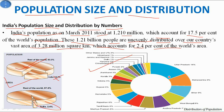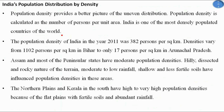The distribution is uneven across states. Only 5 states cover almost 50% of India's population. These five states are Uttar Pradesh, Maharashtra, Bihar, West Bengal, and Andhra Pradesh.